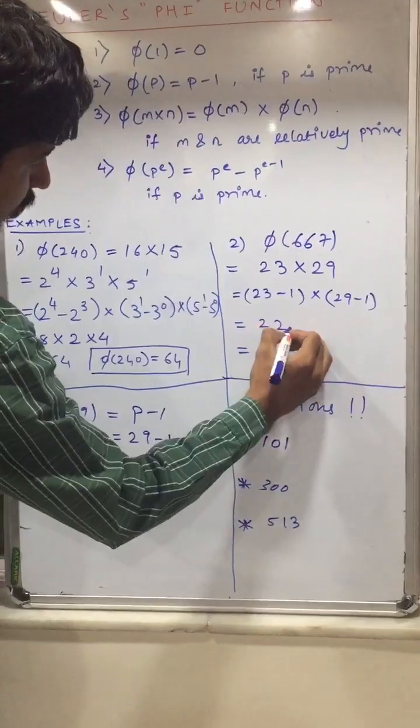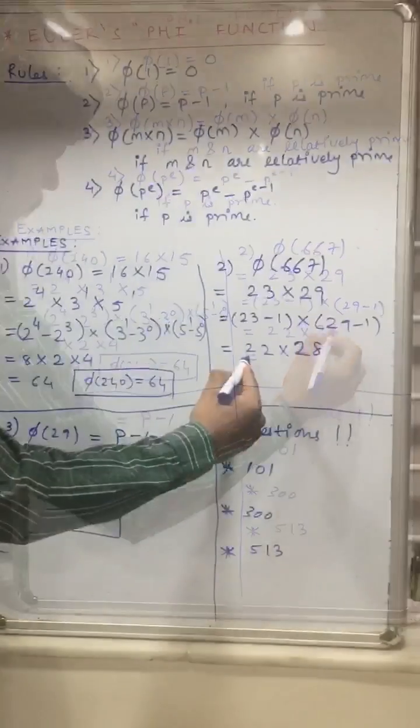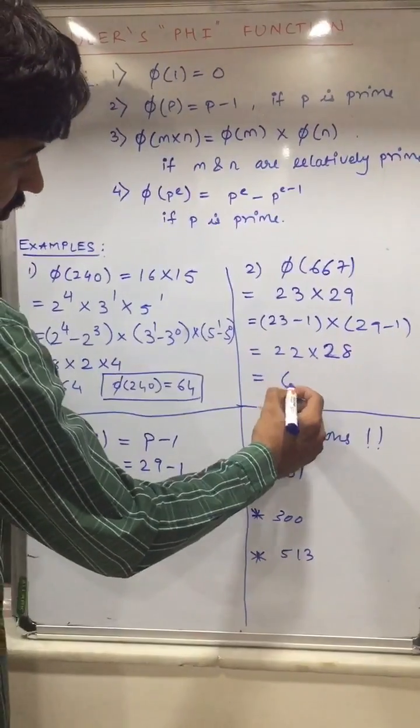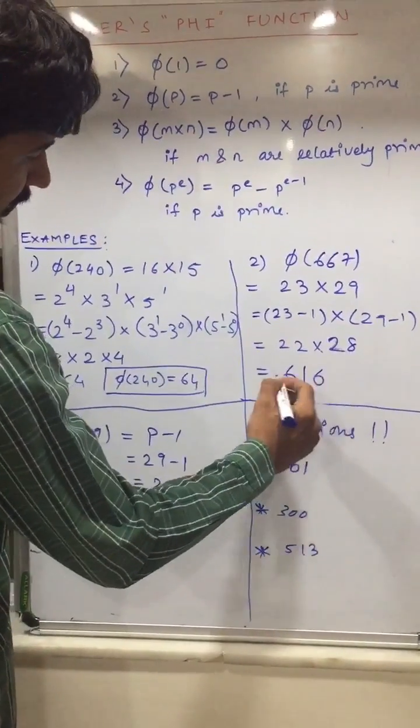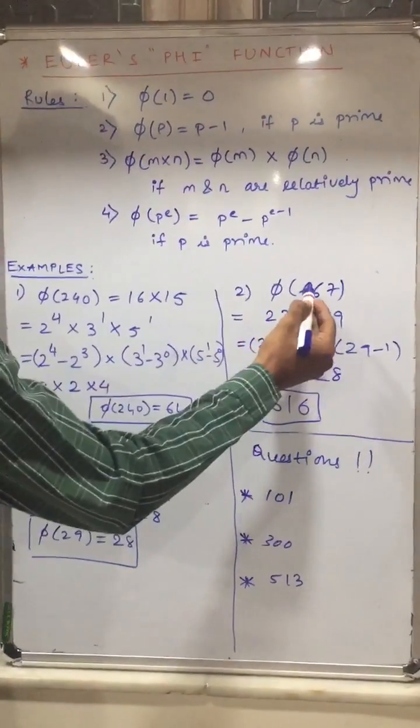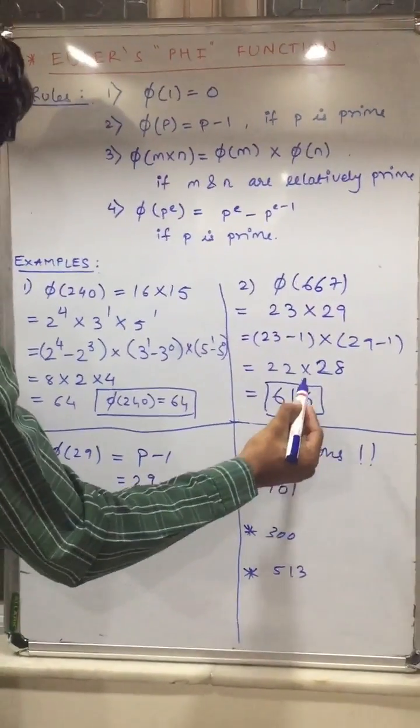So this will be 22 into 28, which equals 616. Therefore phi of 667 is equal to 616.